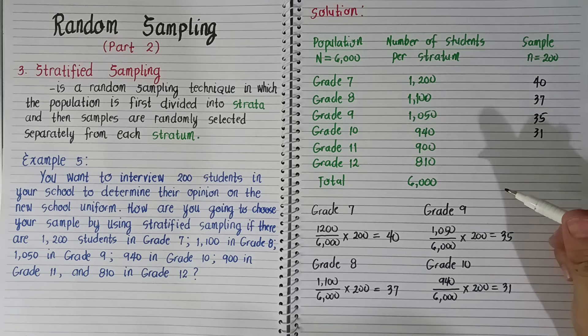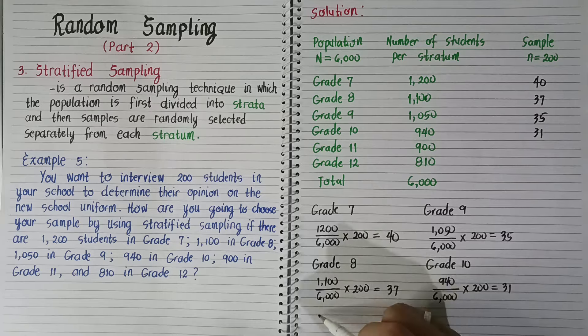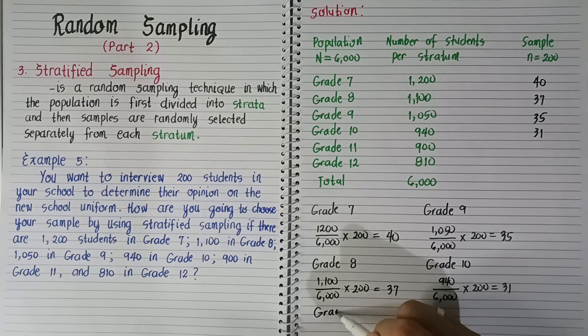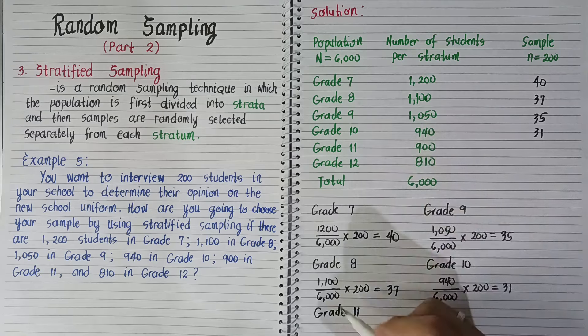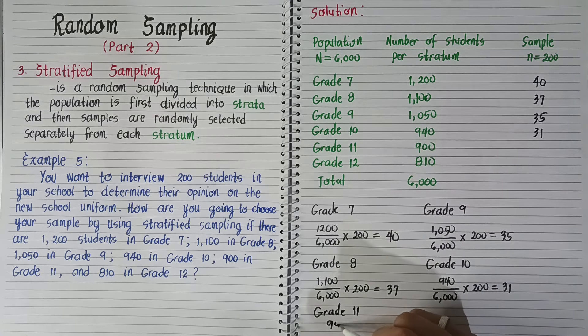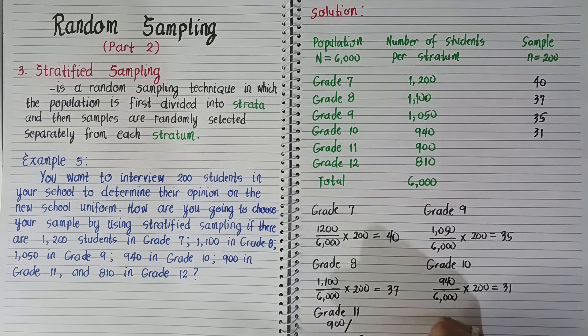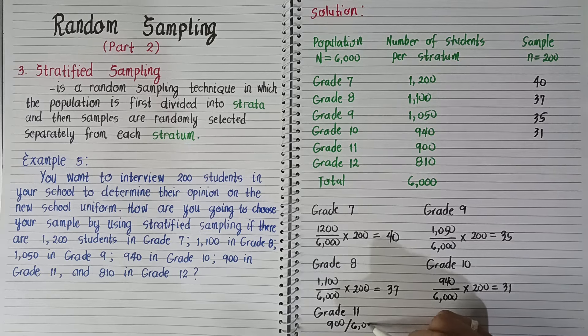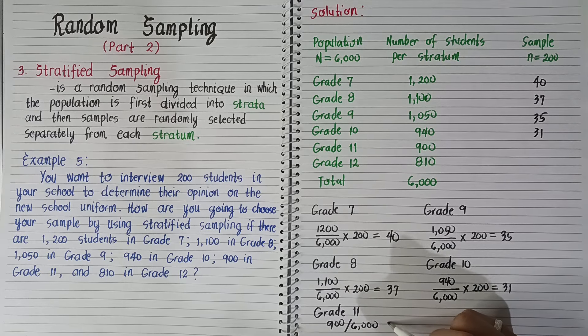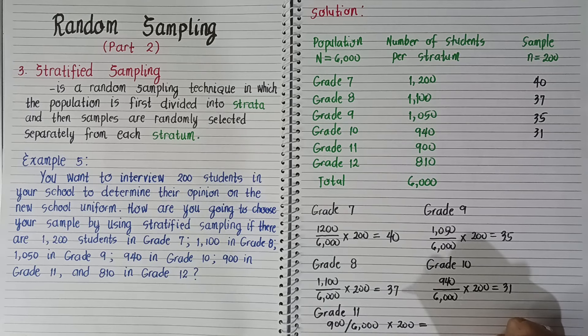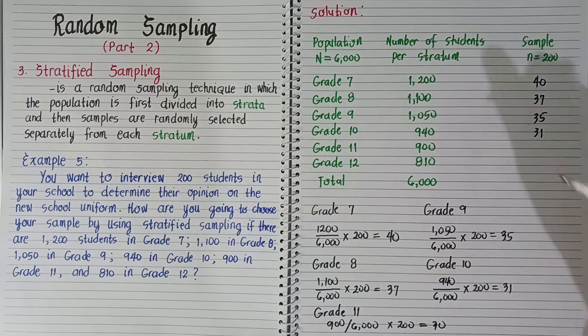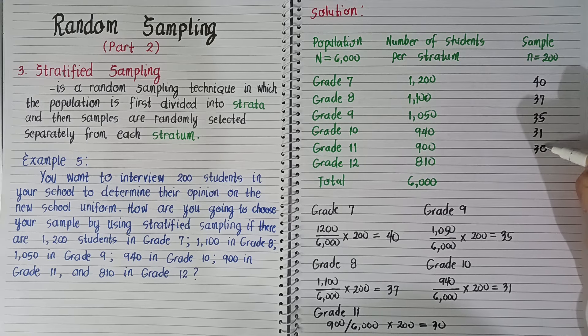For grade 11, we have 900 divided by 6,000 and then times 200. So we have 30.